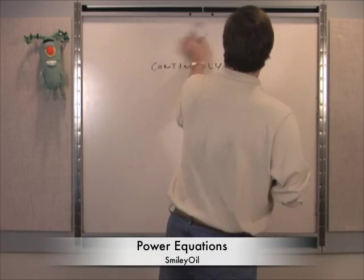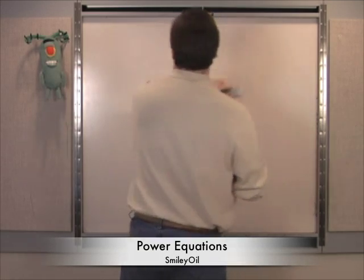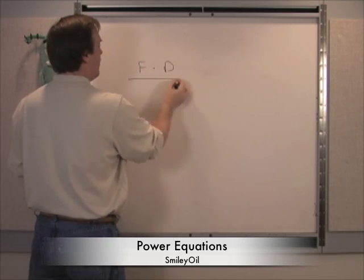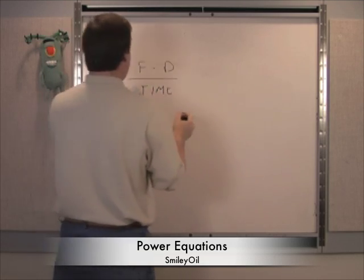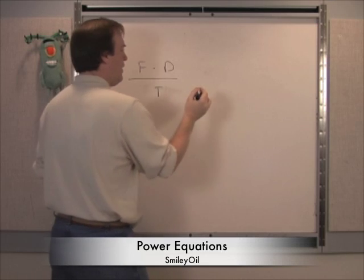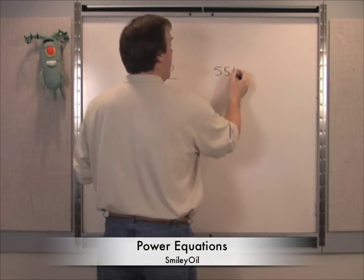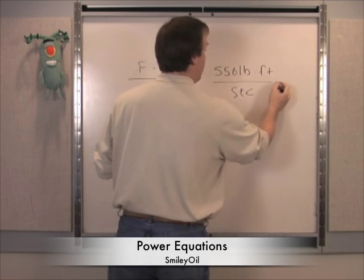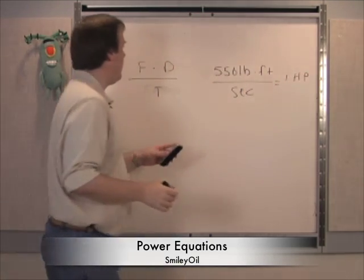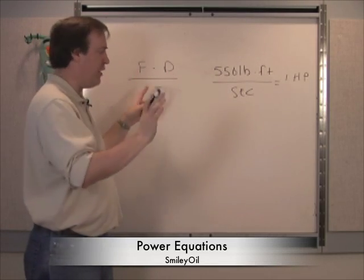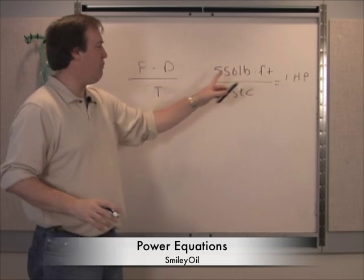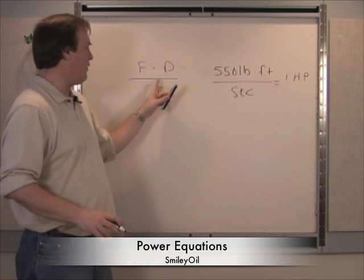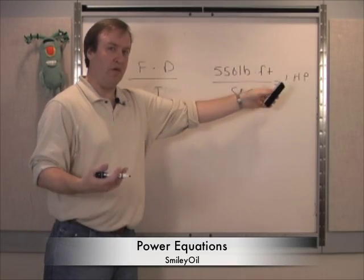Let's go down to an equation, the first equation I introduce for power, which is force times distance over time. We did an example here where we had 550 pounds per foot per second to describe as 1 horsepower. Here, we have the force pushing, which is the pounds, 550 pounds. The distance is 1 foot and the time was 1 second. So this equation, force times distance over time, does fit with the one that we use for horses.